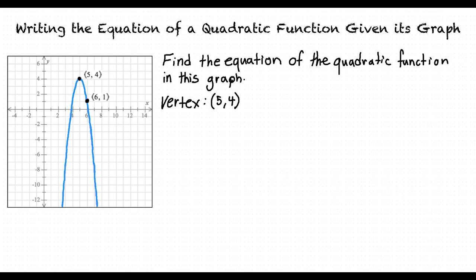The best way to find the a, b, and c values of a function given its graph is by setting the equation all in terms of a, finding the value for a, and then using that numerical value to find b and c. We can first find a relationship between a and b using the equation x equals negative b over 2a. Because we already have the x value of this function's vertex, we can set 5 equal to this equation and solve for b. Solving this equation for b, we find that b is equal to negative 10a.